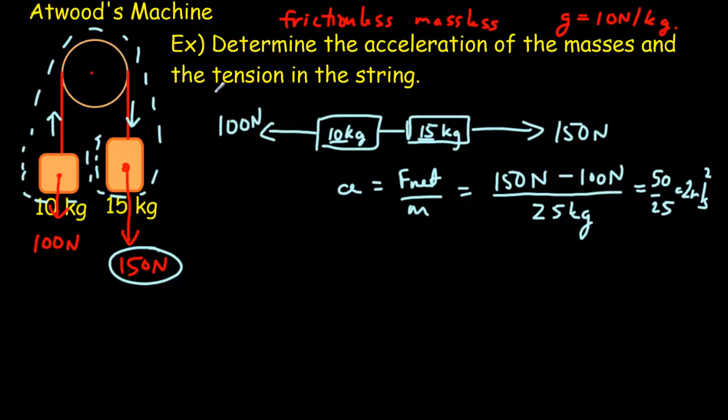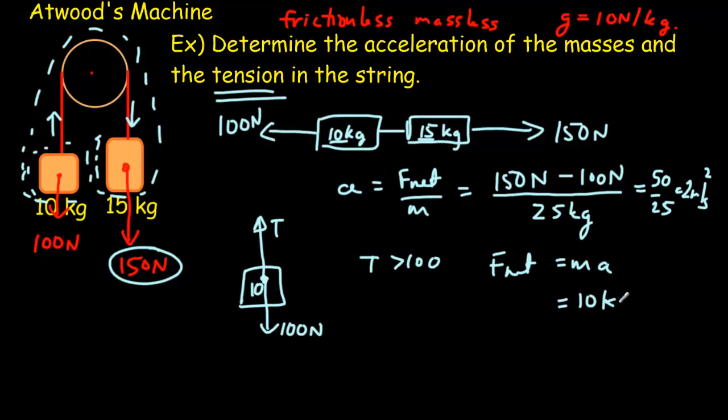That's my acceleration. The next thing we want to find out is the tension in the string. To get the tension in the string, the tension is an internal force if we look at the whole system. So it won't help us to look at the whole system. What we've got to do is isolate the bodies. So let's focus on the 10 kilogram mass right here. So there's our 10 kilogram mass. I'll do a free body diagram. We have to have the tension in the string pulling up. And then we've got that 100 Newtons pulling down. And the tension is going to be bigger than 100 Newtons. We know that this object here goes upwards. So let's write F net equals MA. So here we've got our 10 kilogram mass. So M is 10. The acceleration, we just worked that out. It's 2 meters per second squared.